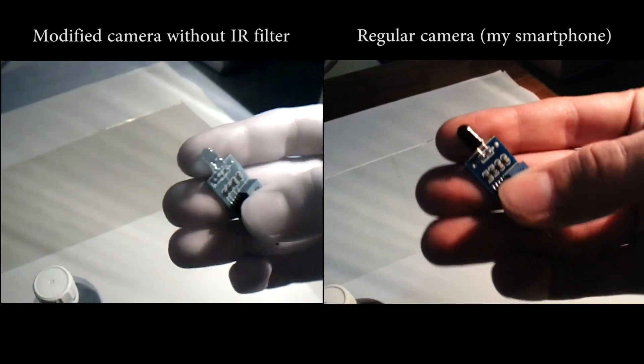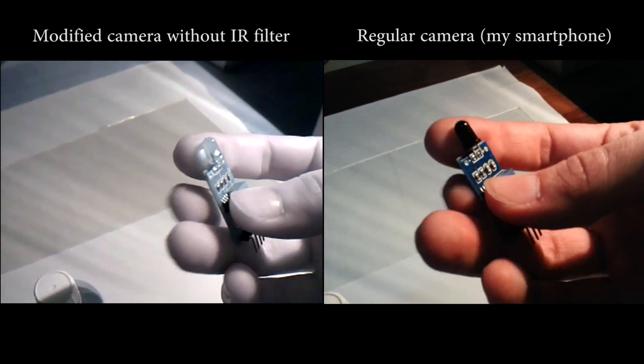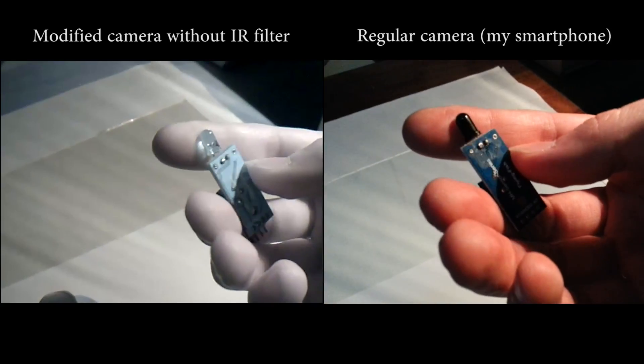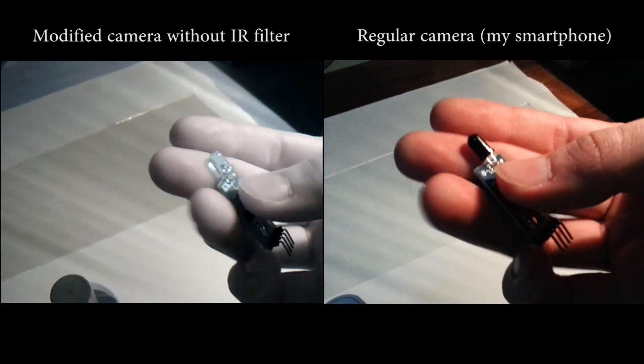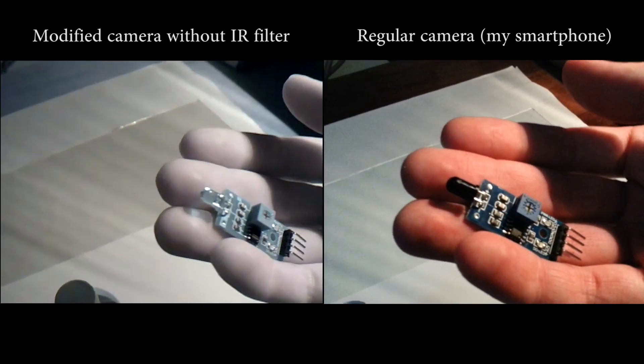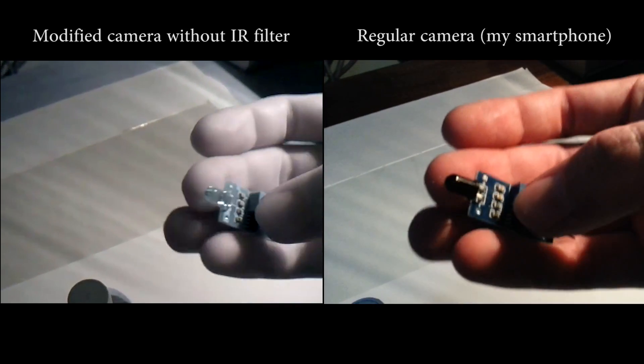Also look at this photo diode that was made to detect infrared light. The case of this diode is made from a material that only transparent for the infrared light. So the case works like a filter.